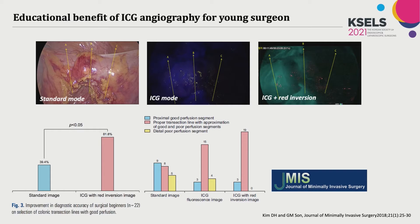This study shows the educational benefit of ICG angiography for young surgeons and medical students. We asked questions about selecting the transaction line. Before examination, residents and medical students were informed that bright color means good perfusion. Results showed that fluorescence imaging significantly improved the accuracy of selecting a good perfusion line.